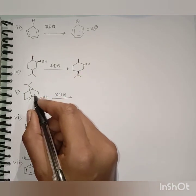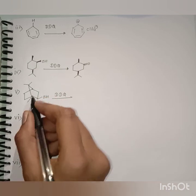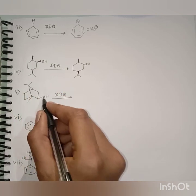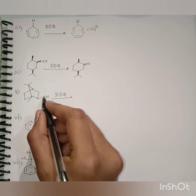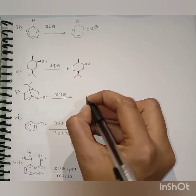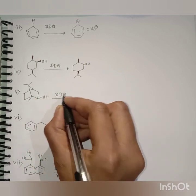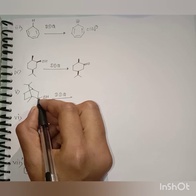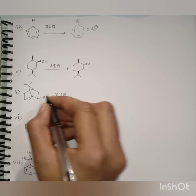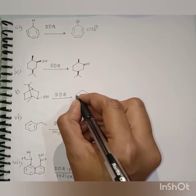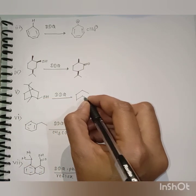In the next example also, due to the two methyl groups, this OH group becomes more hindered, and DDQ performs the oxidation of this more hindered alcohol and we get the product.